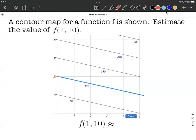Okay, reading a contour map where we have a function that has both an x value and y value, we're trying to come up with what the output would be. So what we mean by this is we're plugging in an x value of 1 and a y value of 10.